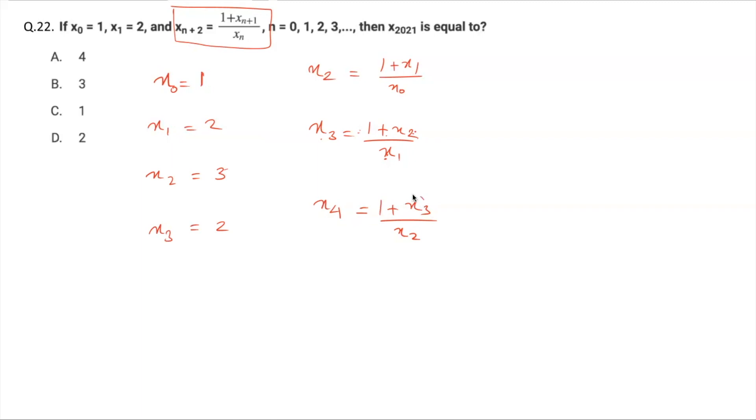So x₄ is 1 plus x₃ equals 2, x₂ is 3, 1 plus 2 upon 3 is 1, so x₄ is equal to 1. Similarly, now you can calculate x₅. x₅ is 1 plus x₄ upon x₃, so x₅ will be equal to x₄, that's 1, x₃ is again 2, 1 plus 1 upon 2 is basically 1.